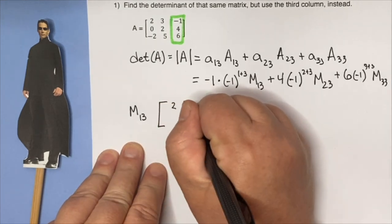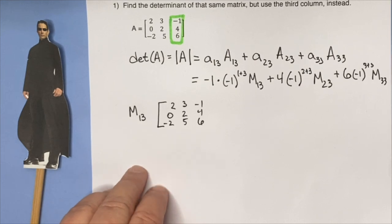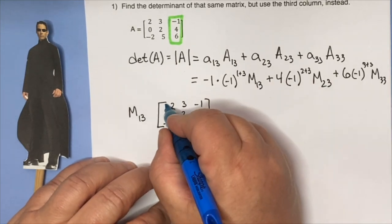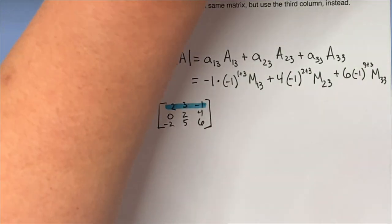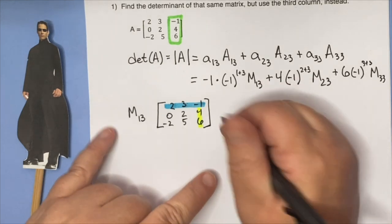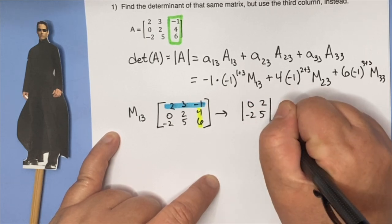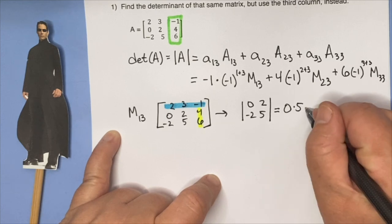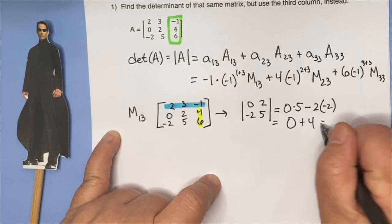We get rid of the first row and the third column. So now I'm going to get the determinant of the remaining 2×2 submatrix: 0, 2, negative 2, 5. I notice something nice — there's a zero. So that means one of these values is going to cancel out. I've got zero, and then I've got plus 4. So that's equal to 4.